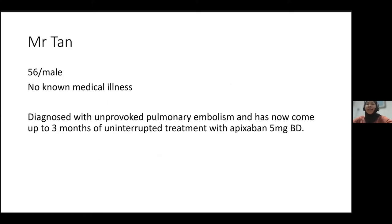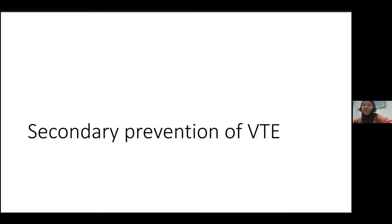I'll start with a case. Mr. Tan is a 56-year-old gentleman with no medical illness. He was diagnosed with an unprovoked pulmonary embolism and has now completed three months of uninterrupted treatment with apixaban 5mg BD. We are looking at answering the question of whether Mr. Tan requires extended treatment to prevent a recurrence of VTE — and that is what secondary prevention of VTE is all about.